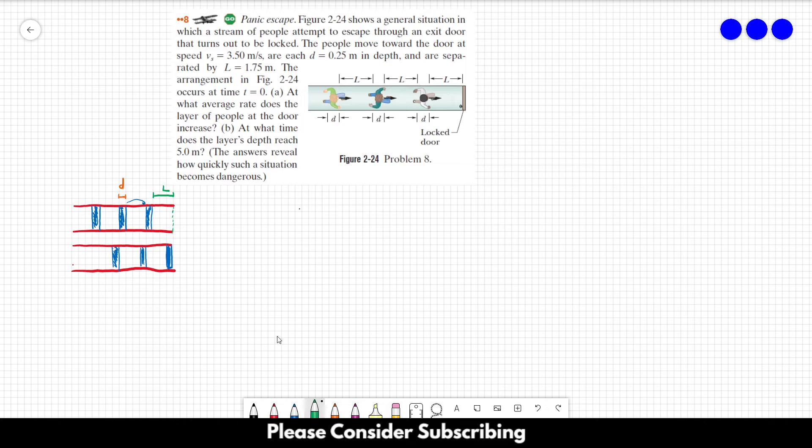Now the second person has to travel L to reach the first person. So this is L as well. When that happens the second person is here, and the third person is in this position over here.